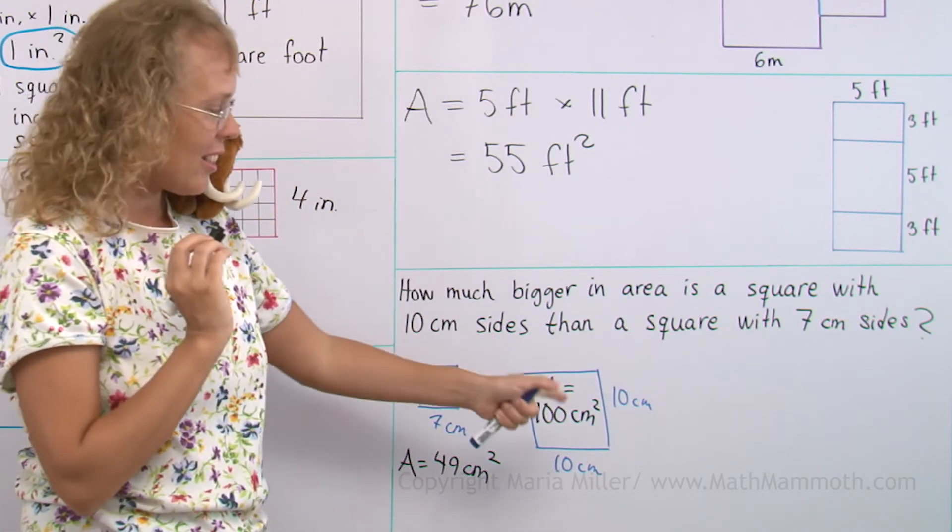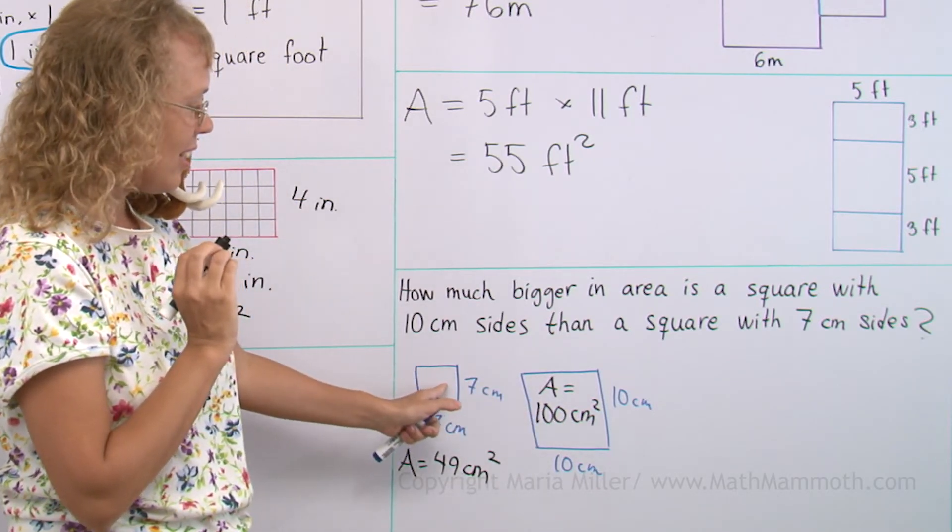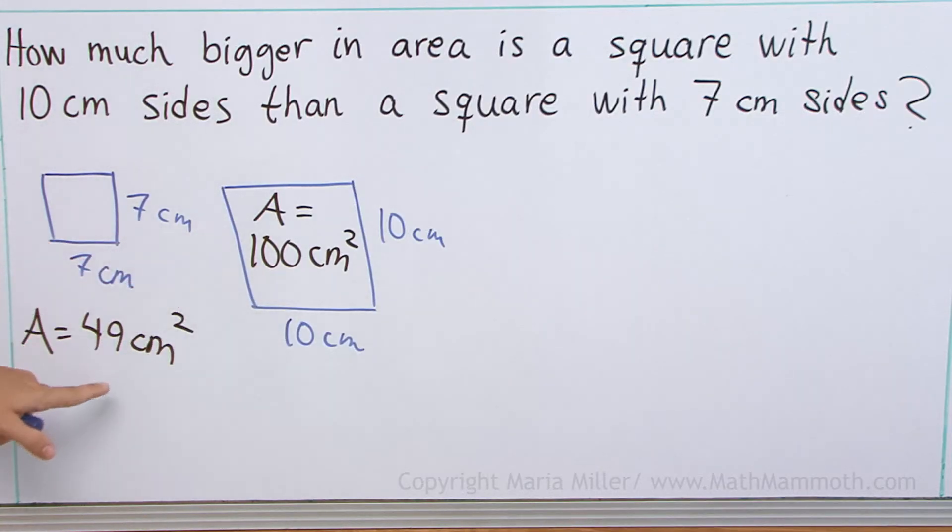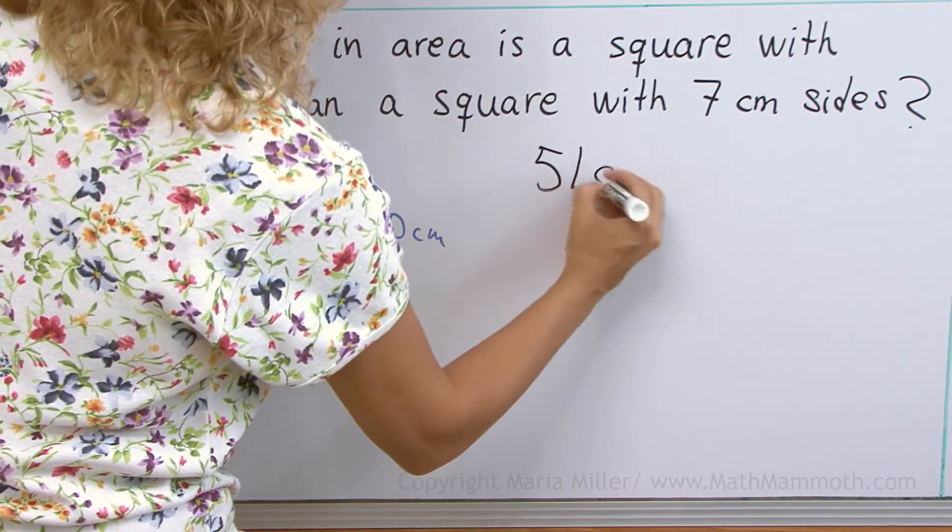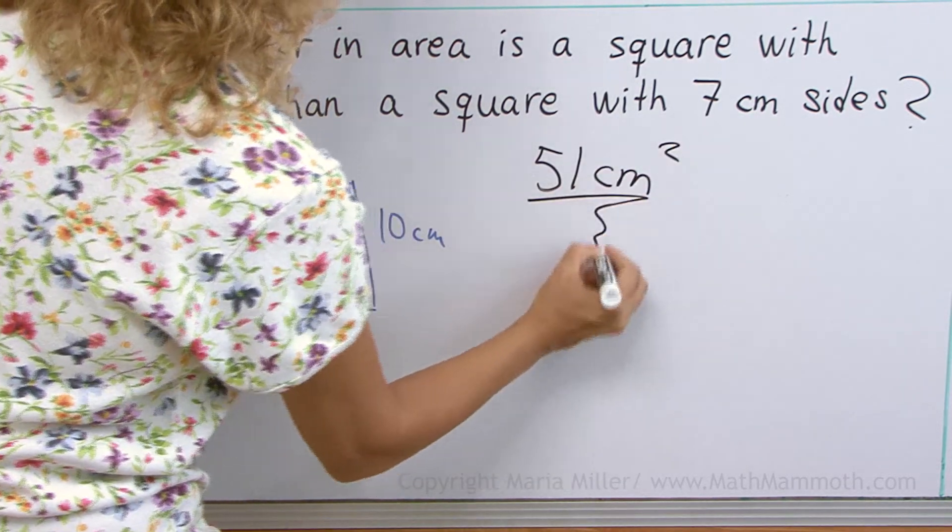How much bigger in area is this than that? 100 versus 49. We subtract and we get 51 square centimeters, right?